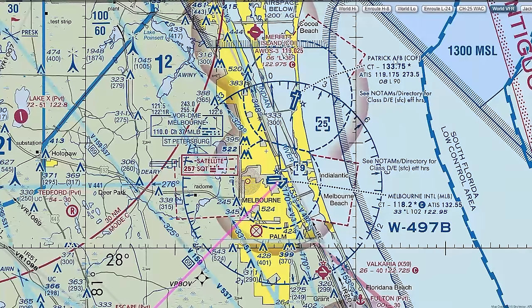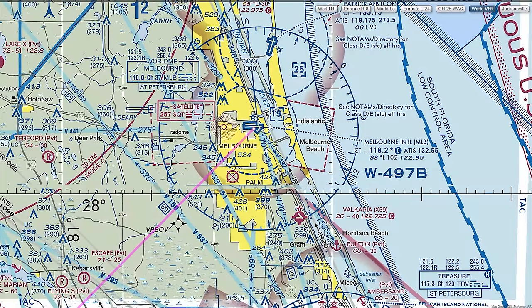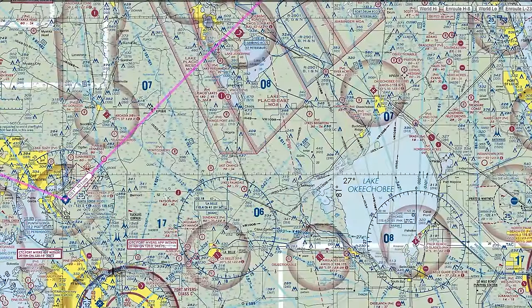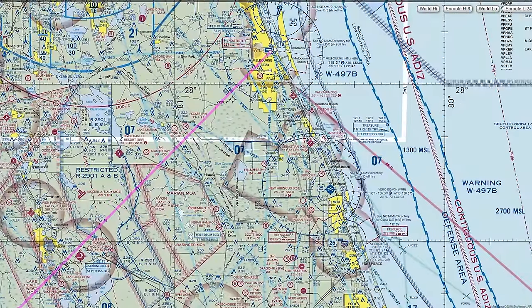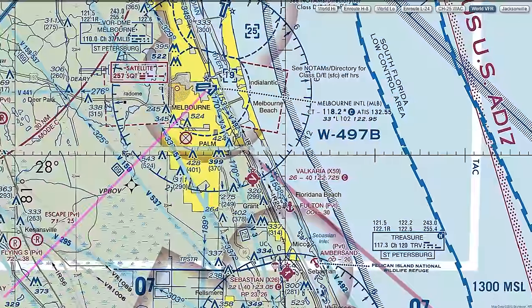Melbourne has a Class D tower, and it abuts the Patrick Air Force Base Class D, so we'll want to watch out and not get too close. We can navigate from Punta Gorda to Melbourne using VORs — use the Punta Gorda VOR to depart, then switch to the Melbourne VOR about halfway there. The Melbourne VOR frequency is 110.0, with its Morse code identifier and DME available on channel 37. The 243 MHz frequency is military and not relevant for our Cessna. We can also contact St. Pete Flight Service using the frequencies above the VOR box — they receive us on 122.1 and we receive them over the Melbourne VOR.